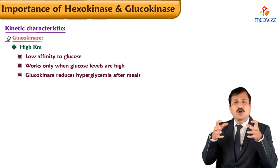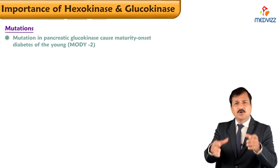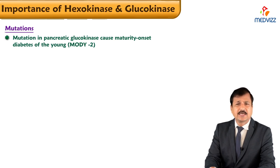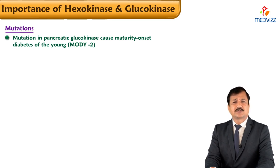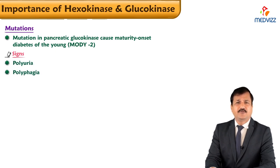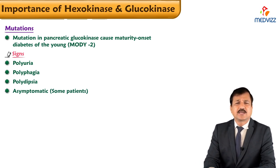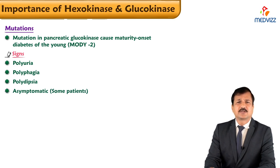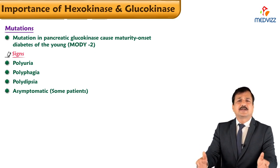Now let us look at mutations and their consequences. A well-known mutation of pancreatic glucokinase leads to a disorder called MODY type 2 — maturity onset diabetes of the young type 2. Patients can manifest with classic signs of diabetes such as polyuria, polyphagia, and polydipsia, or some patients may be asymptomatic despite having elevated blood glucose. MODY type 2 runs in the family.